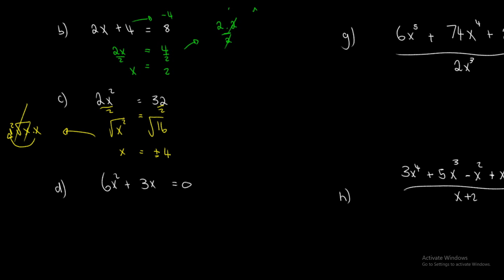Why do we say plus or minus? Well, negative 4 times negative 4 gives me positive 16, and 4 times 4 is also equal to 16. So which one is it really? We don't know — hence plus or minus.